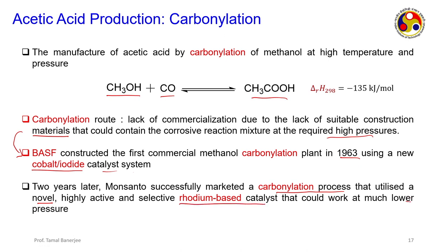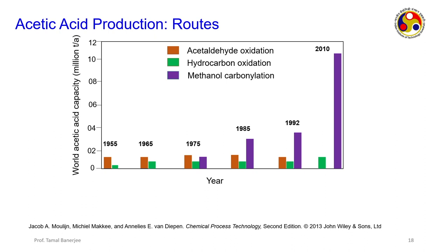Looking at production data: the violet bars (methanol carbonylation route) became dominant after 1975, 1985, 1992, while the orange bars (acetaldehyde oxidation) declined - demonstrating industry adoption of the superior carbonylation technology based on economics and market demands. This shows how as technology changes, industry also changes and adopts newer methods.